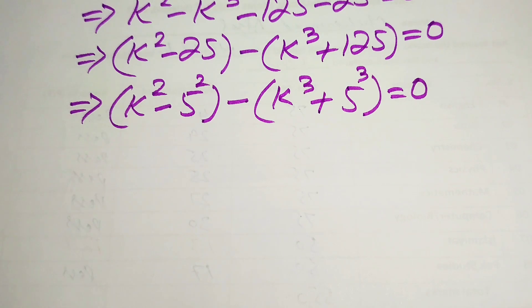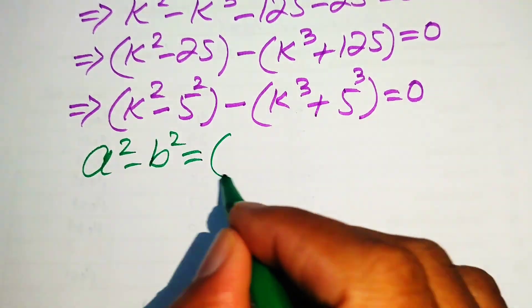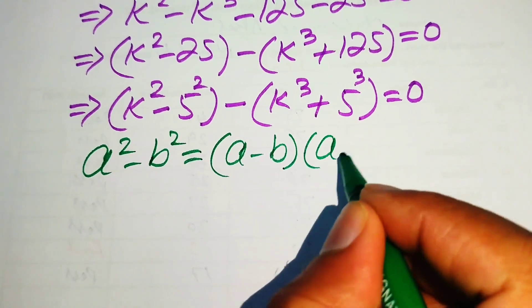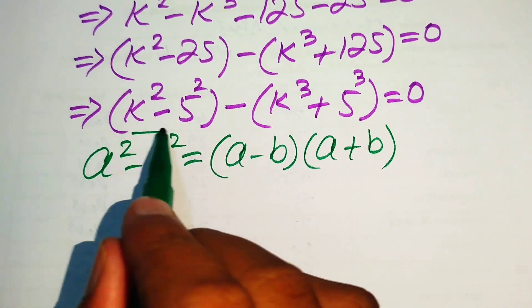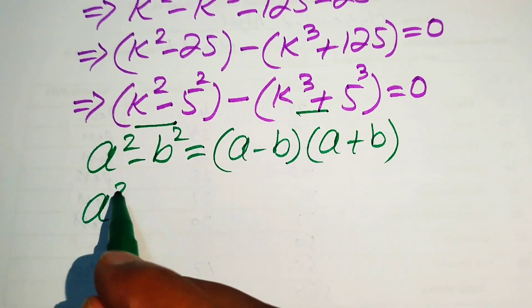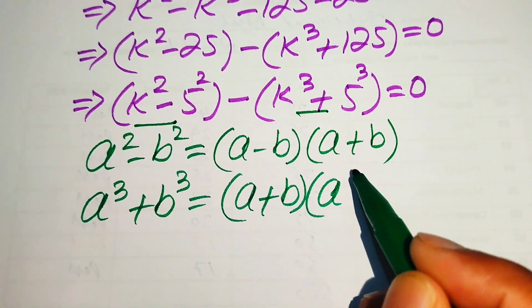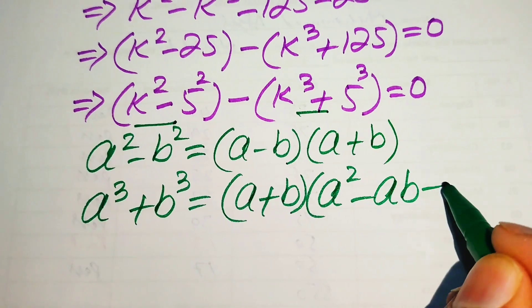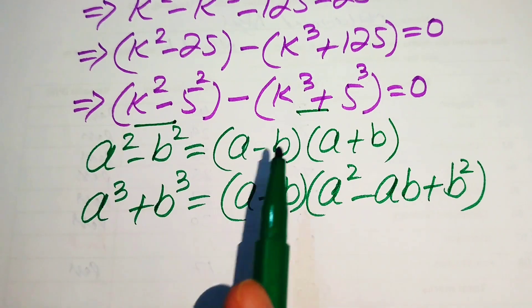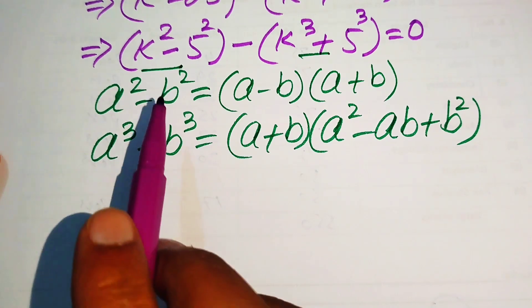We need two algebraic identities to solve this equation. The first is the difference of squares: a squared minus b squared equals (a minus b)(a plus b). The second is the sum of cubes: a cubed plus b cubed equals (a plus b)(a squared minus ab plus b squared). We use the square identity on the first term and the cubic formula on the second term.